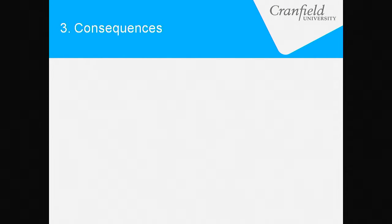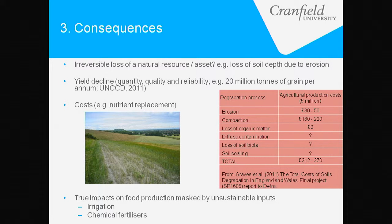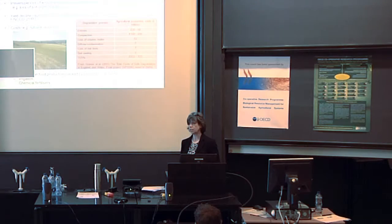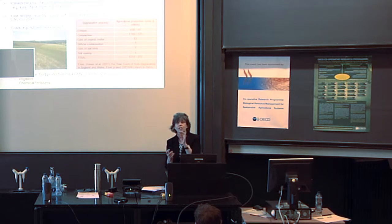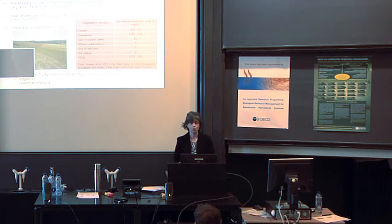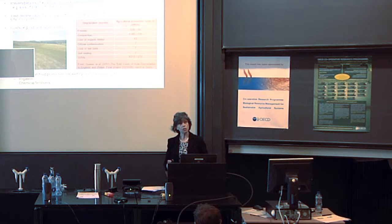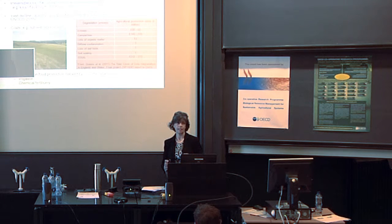So what are the consequences? Why do we bother? Land degradation and soil degradation leads to an irreversible loss of this natural resource — soil formation rates are very, very slow, so degradation is effectively irreversible. This is farmers' most important business asset, and they're losing it through these degradation processes. No raw material, no profit. What we're also seeing is yield decline — not only in the quantity but also the quality, the marketable yield of crops, and the reliability of yield year on year.